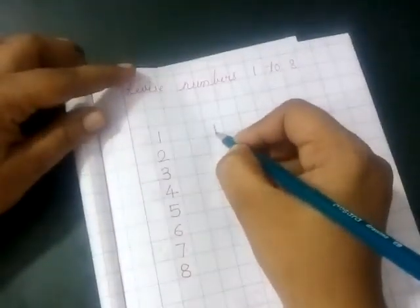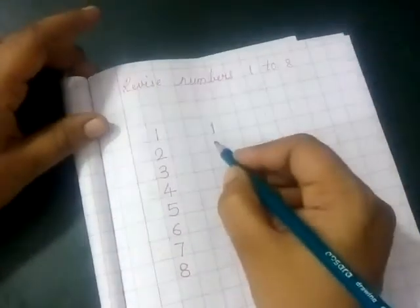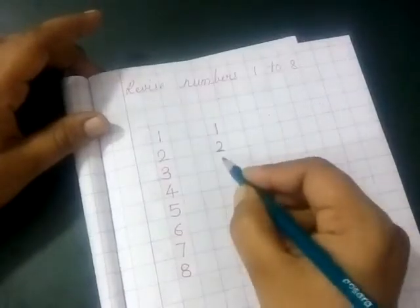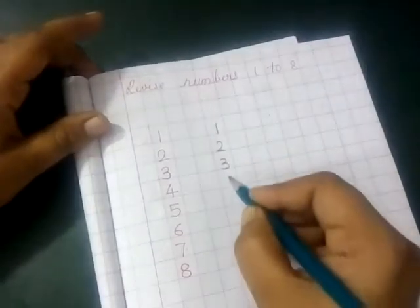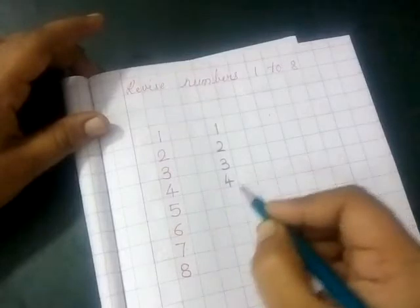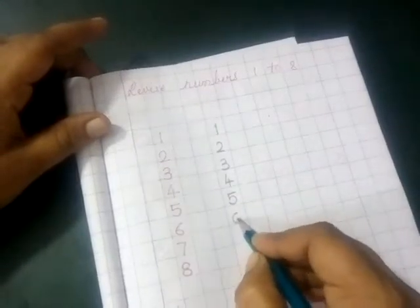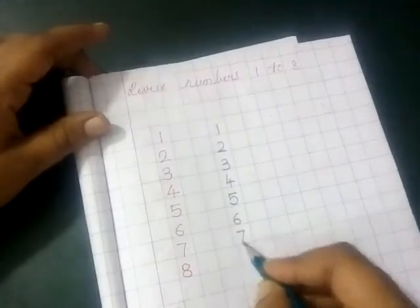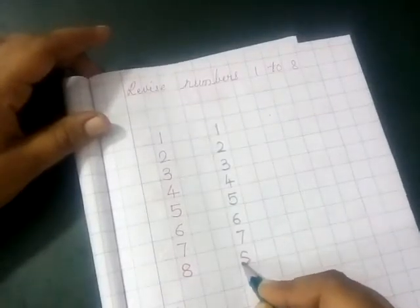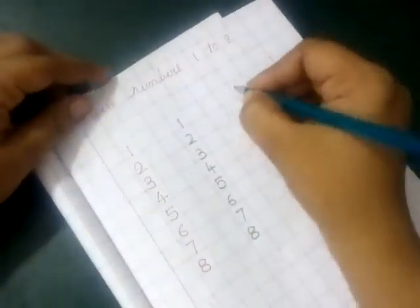Okay, so let's start writing numbers. This is 1, 2, 3, 4, 5, 6, 7, 8. Okay, write like this. Now,